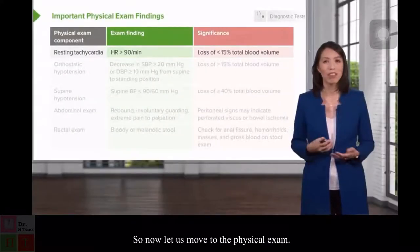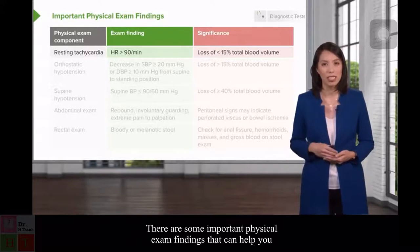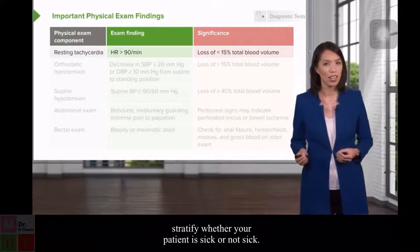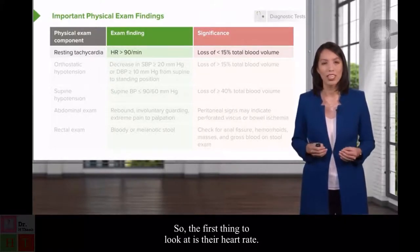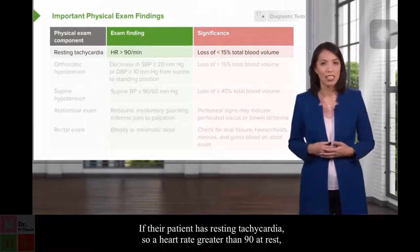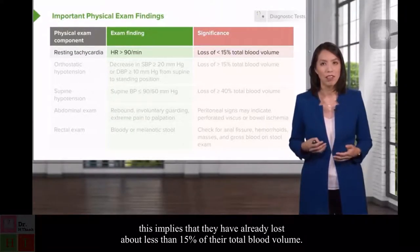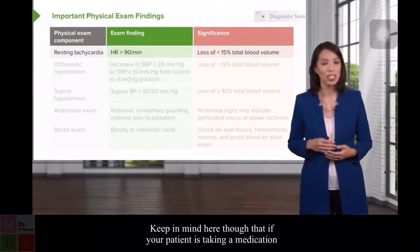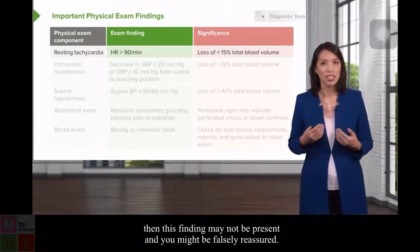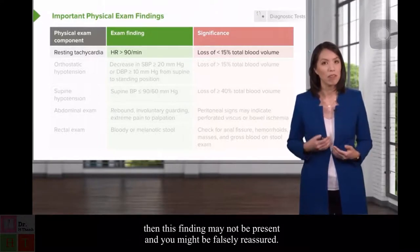Now let's move to the physical exam. There are important findings that can help stratify whether your patient is sick or not. First, look at their heart rate. If the patient has resting tachycardia — a heart rate greater than 90 at rest — this implies they have already lost about less than 15% of their total blood volume. Keep in mind that if your patient is taking a medication that slows the heart rate, like a beta blocker or calcium channel blocker, this finding may not be present and you might be falsely reassured.